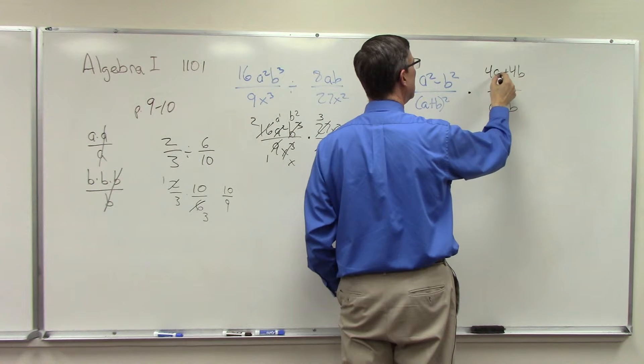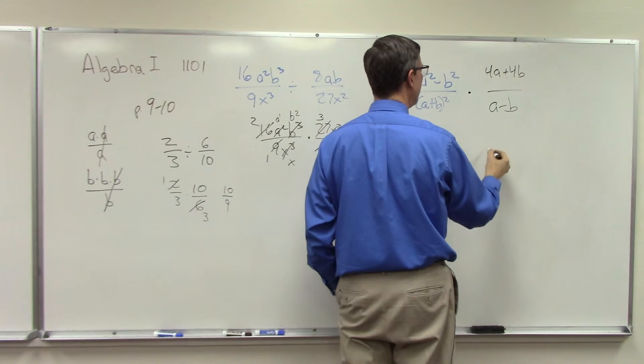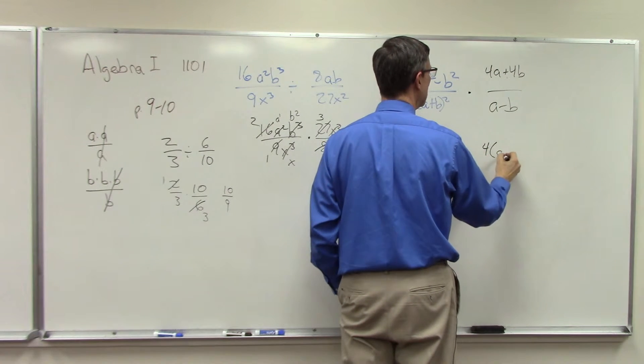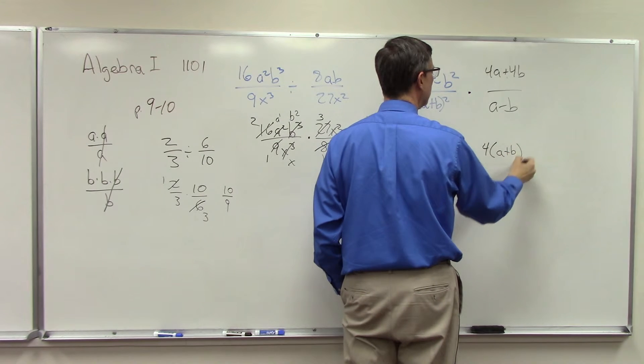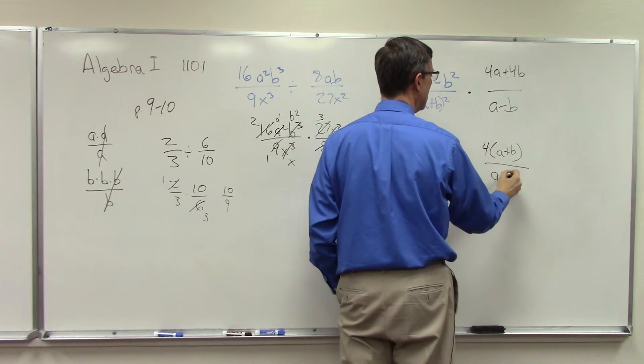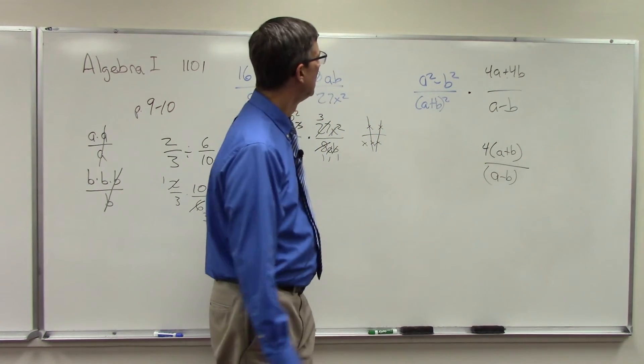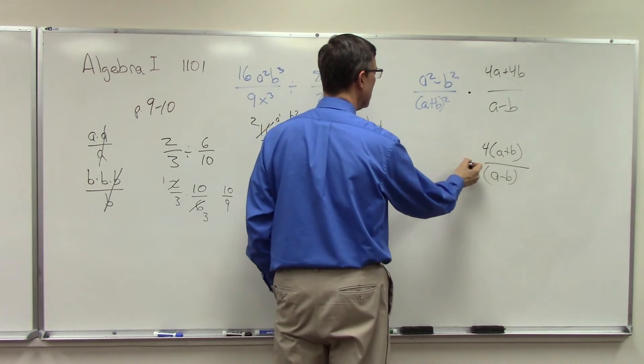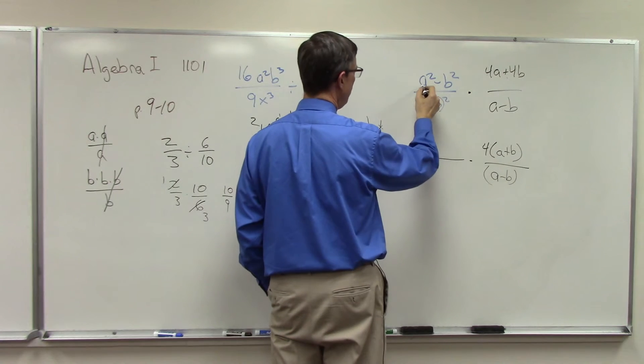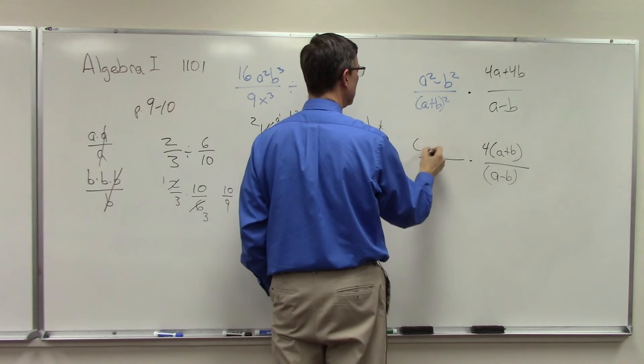I'm going to jump right over here and I see that there's a common factor of 4. So if I take that out, I have a + b—are you with me?—over a - b. I like to put it in parentheses.